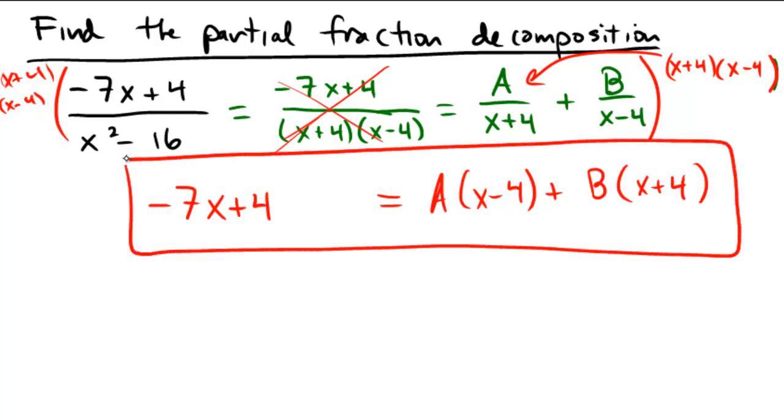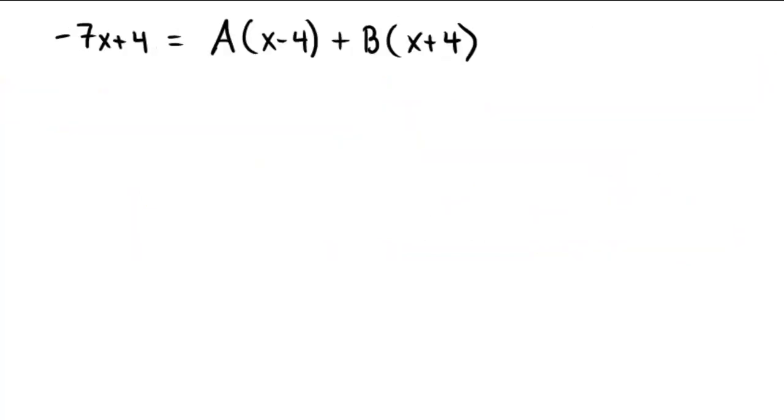So this is the equation we now get to work with, to hopefully isolate and try to find out what the A and the B are. So I need a little bit more room, so I'm just going to rewrite this on the next screen. Negative 7x plus 4 equals A times x minus 4 plus B times x plus 4.